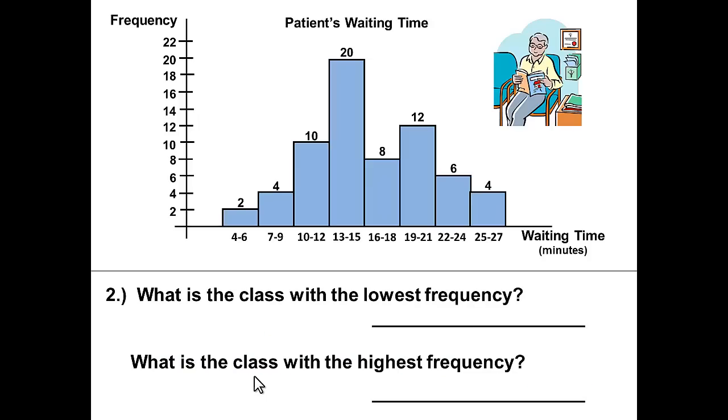The second question asks what is the class with the lowest frequency? That would be this class that we have highlighted in red. It has the lowest number and the smallest height. But look at what the question is asking. The question is asking for the class. It is not asking for the frequency or how many. So our answer will not be 2 but the class, the number of minutes that these two patients waited. So the answer will be 4 to 6. The two patients only had to wait 4 to 6 minutes. So we use the waiting times to describe the class.